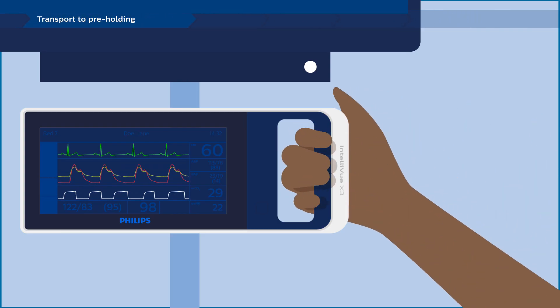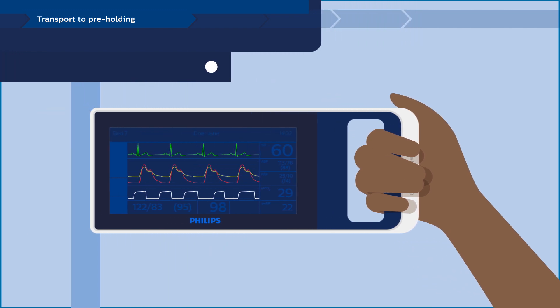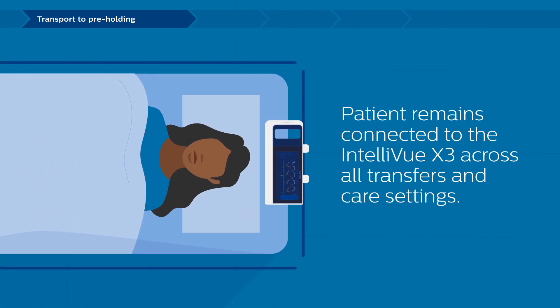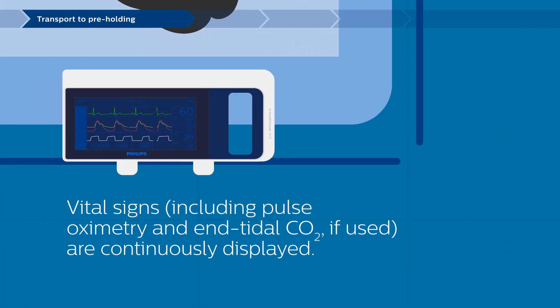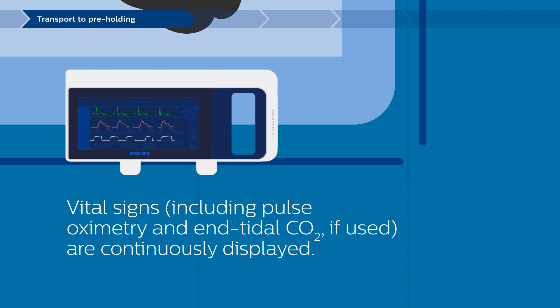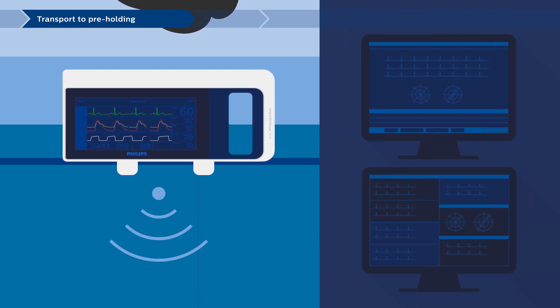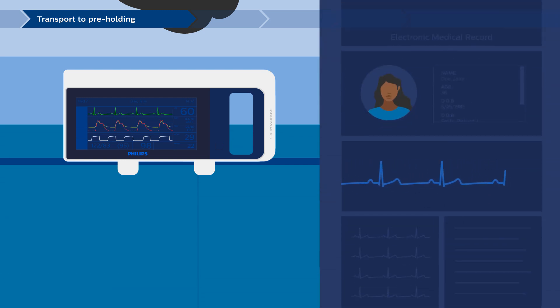As the patient is prepared for transfer to the cath lab, the Intelliview X3 is undocked from the Intelliview bedside monitor and automatically transforms into a fully functional transport monitor. Sensors and cables, as well as the Intelliview X3 monitor, stay with the patient as they move between departments. As the patient is transported, vital signs are continuously displayed on the X3 monitor. Data is wirelessly transferred to the PIC-IX central monitoring system and documented in the EMR, including snapshots of waveforms.